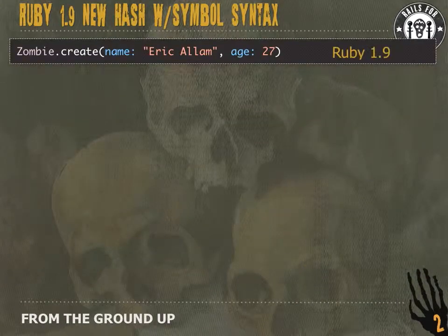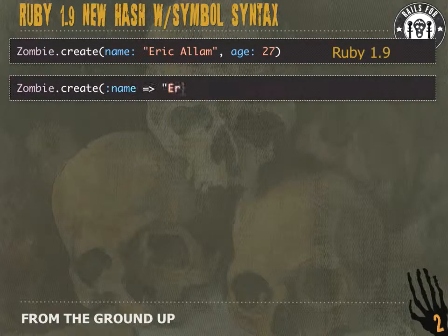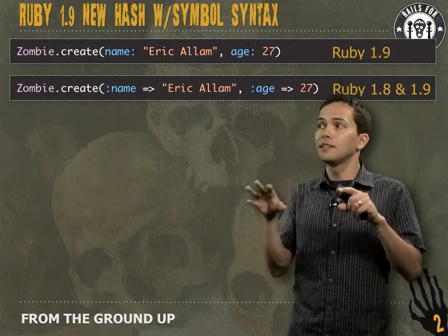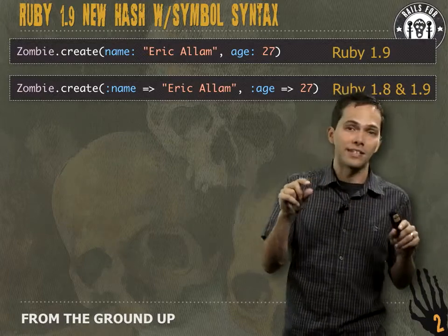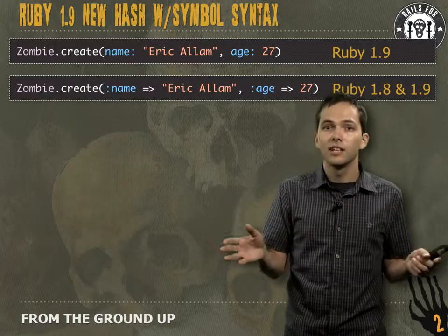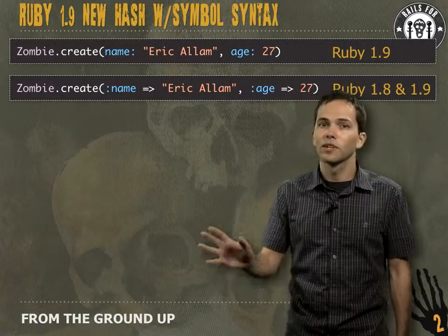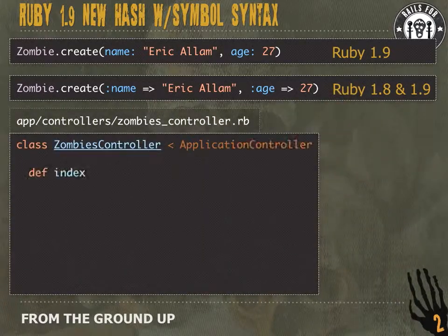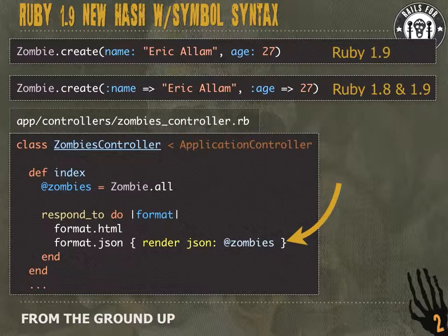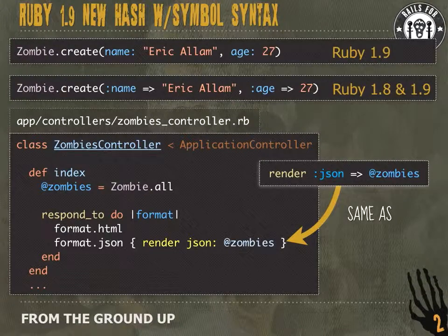Here again is the code to create zombie Eric using the Ruby 1.9 hash syntax, and here it is using the older hash rocket syntax — but you can still use either in Ruby 1.8 or 1.9. In this tutorial, we're going to use the new way. If you look inside the controller that the scaffolding created, you can see in the `respond_to` block it says `render json: zombies` — that's using the Ruby 1.9 hash syntax, and it does the same thing as the old syntax.